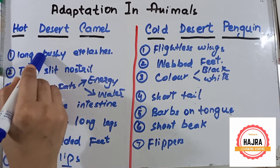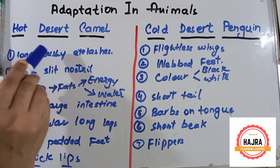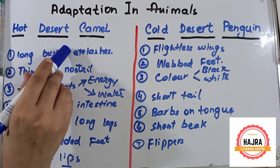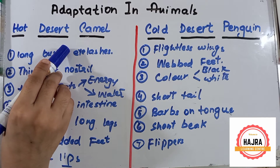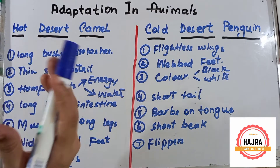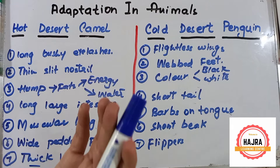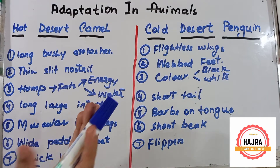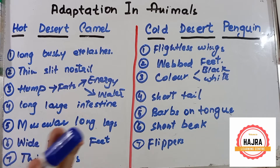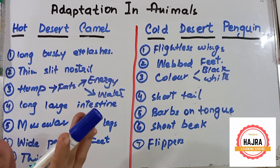Number one point in camel is they have long bushy eyelashes, which help them to keep the sand away from their eyes. This is the function of long bushy eyelashes.